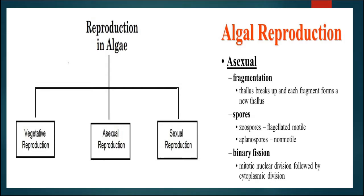In this slide, we can see reproduction in algae. Algae exhibit three types of reproduction: vegetative, asexual, and sexual. Vegetative reproduction occurs mostly by fragmentation, where the thallus breaks into different small fragments and each develops into a new thallus. Asexual reproduction takes place by formation of various types of spores — zoospores which are flagellated and motile, and aplanospores which are non-motile without flagella. They also undergo binary fission, where the parent cell divides into two daughter cells through mitotic division.